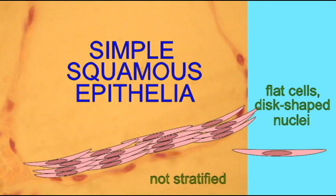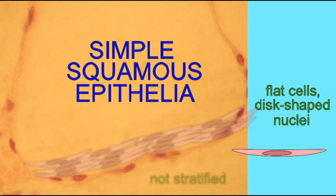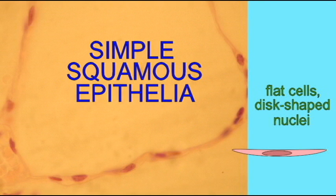If it were stratified, there would be multiple layers of cells, and clearly that is not the case. So this is an example of simple squamous epithelia.